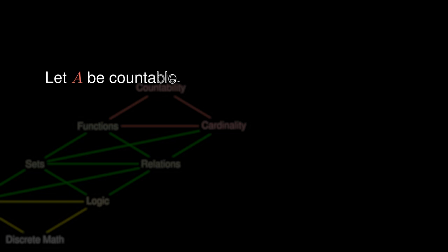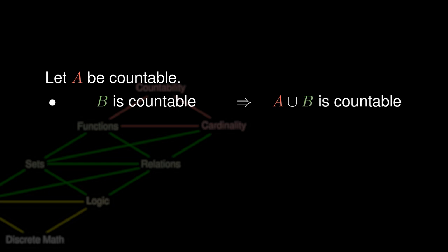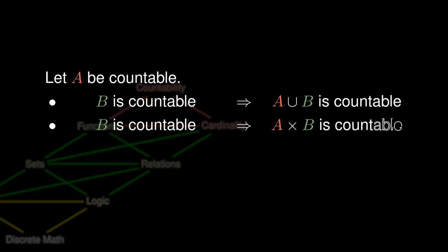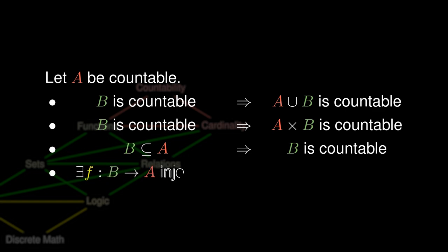Countable sets have really nice properties. If A is countable and B is countable, then the union of the two sets must be countable. Furthermore, their product is also countable. If B is a subset of A, then B is also countable. More generally, if we can find an injection from B to A, then B is countable. These are really useful countability properties for problem-solving purposes.